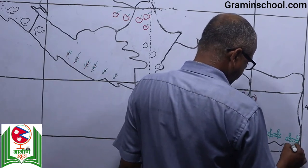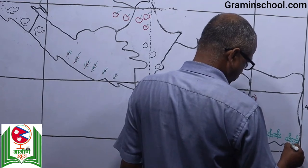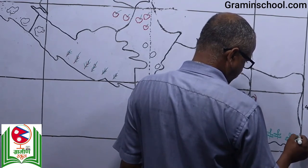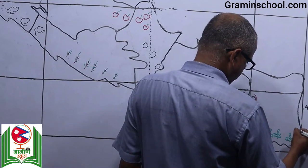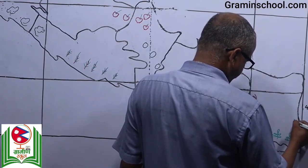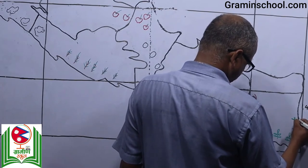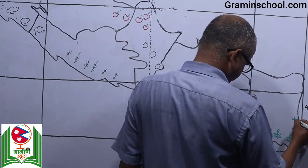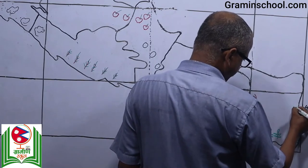Tea production area — just draw three small leaves to mark it. Jhapa is the biggest producer of tea in Nepal, followed by Ilam and Terhathum.